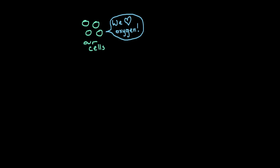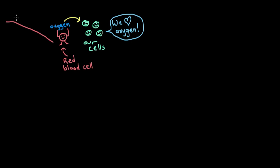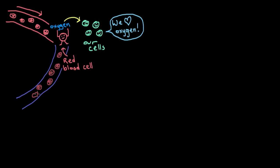To get oxygen to all of our cells, we have special delivery cells dedicated to carrying oxygen to every other cell. These delivery cells are red blood cells within our blood, and they get around our body by way of our circulatory system, which is made up of our arteries, our veins, and our heart.